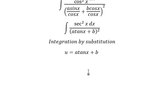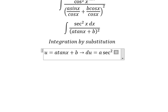We do the first derivative for both sides, and we have du equals a secant squared x dx. Because we don't have a in here, so we divide both sides by a.